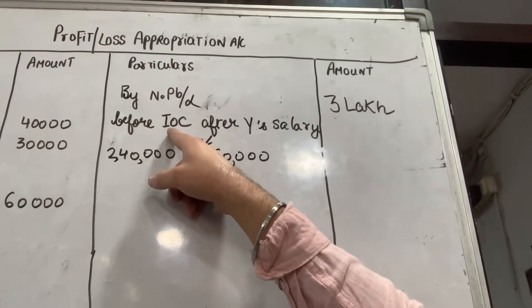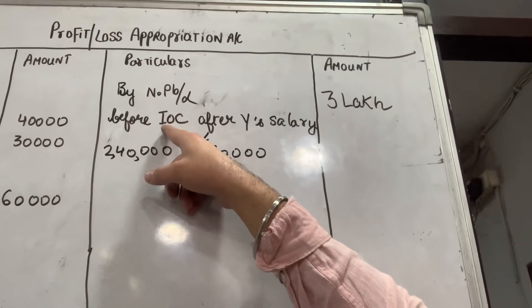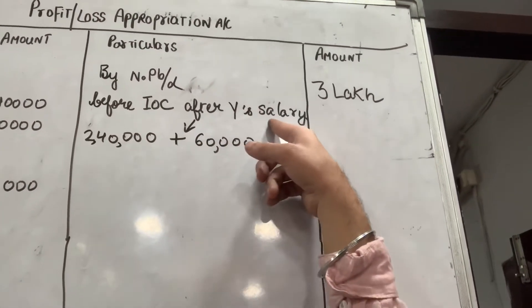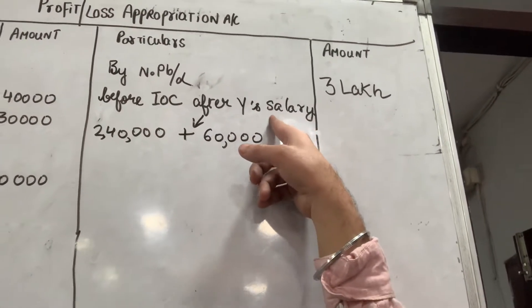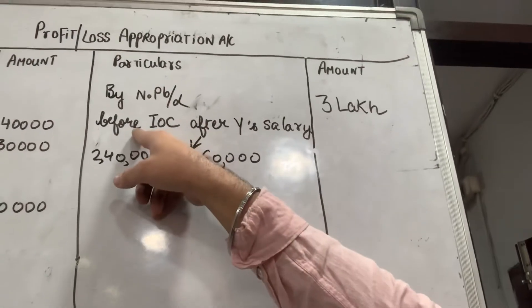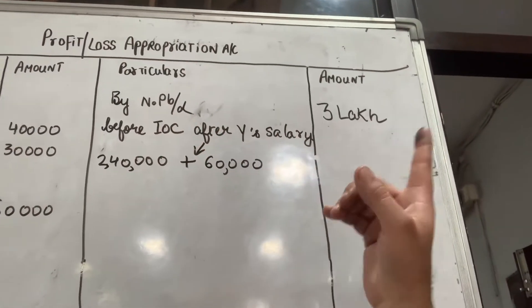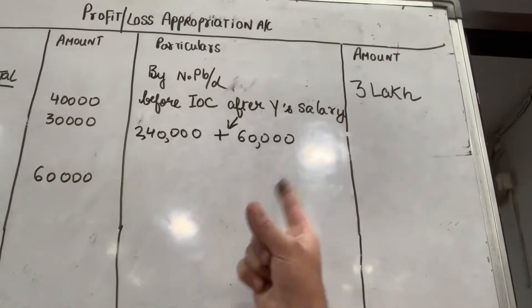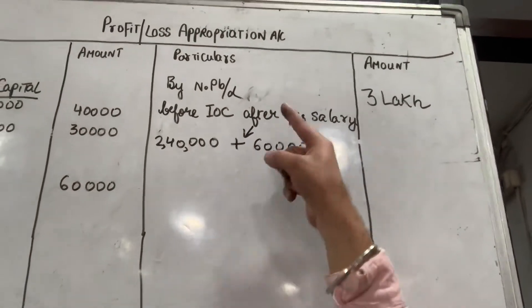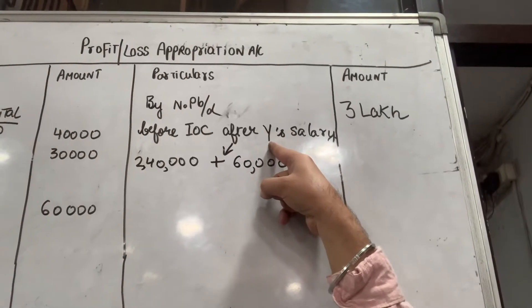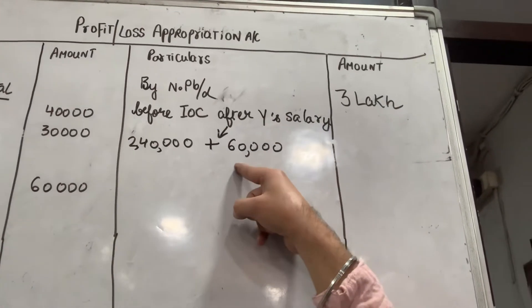Since salary has been cut down but IOC has not been cut down, salary is already deducted, which means salary is cut down. So, we have to add the salary back.